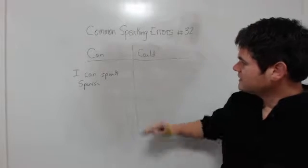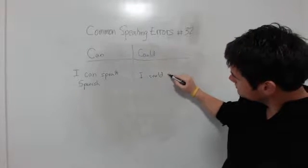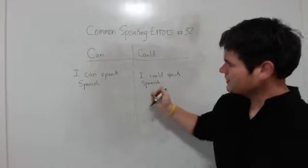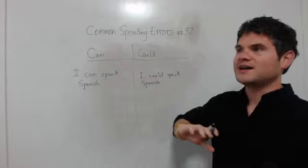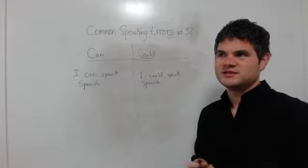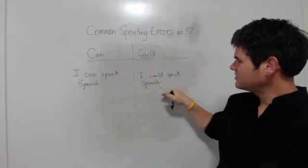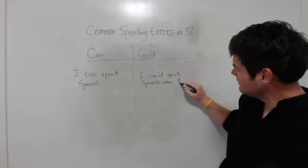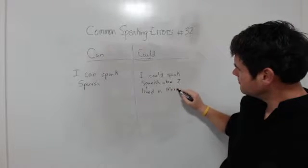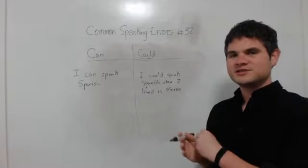Now if I said I could speak Spanish, I mean I could speak Spanish in the past sometime. The thing with using a modal verb like could is sometimes we want to establish a little bit of context here. So we could say 'I could speak Spanish when I lived in Mexico.'